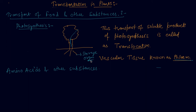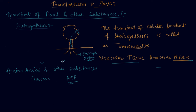The translocation of food and other substances takes place in the sieve tubes with the help of adjacent companion cells, both in upward and downward directions. Unlike transport in xylem, which can be largely explained by simple physical forces, translocation in phloem is achieved by utilizing energy. Material like glucose is transferred into phloem tissue using energy from ATP. This increases the osmotic pressure of the tissue, causing water to move into it. This pressure then moves the material in the phloem to tissues which have less pressure.